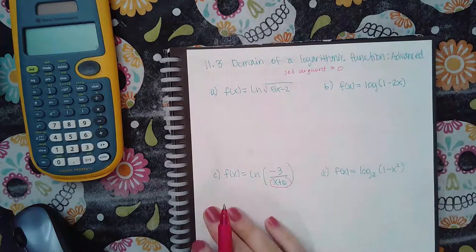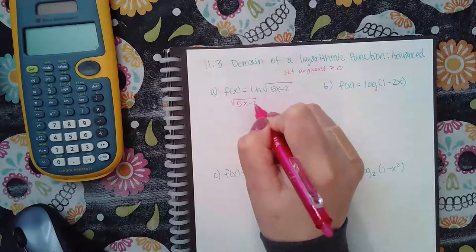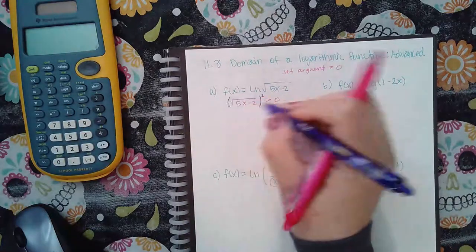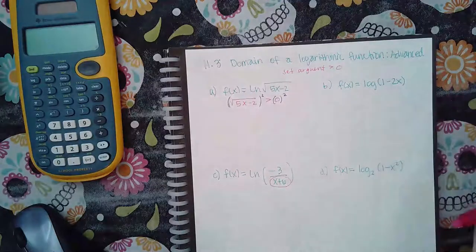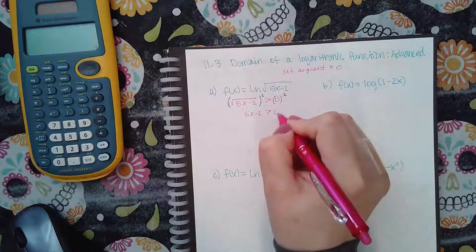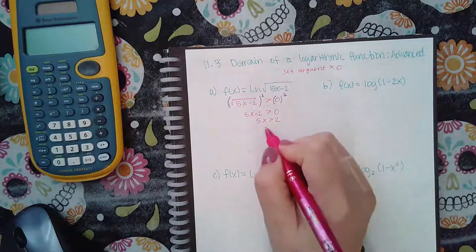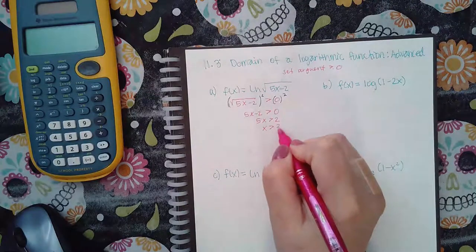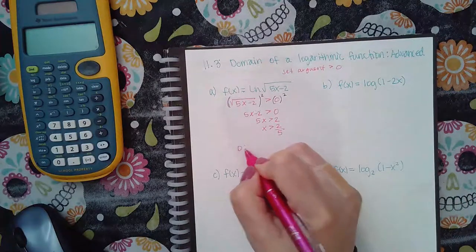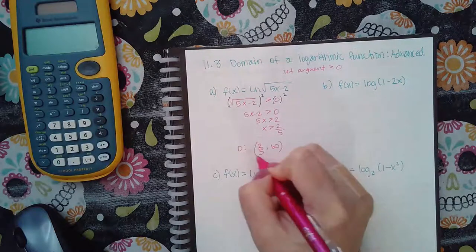For this problem I'm going to take my argument and set it greater than zero. In order to solve that I would have to square both sides of the inequality, which gives me 5x minus 2 by itself and zero on the right. Zero times zero is still zero, so if I add two to both sides I get 5x is greater than two, and dividing by five gives x is greater than two-fifths.